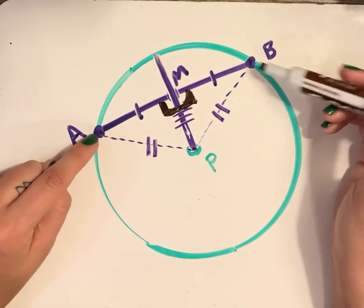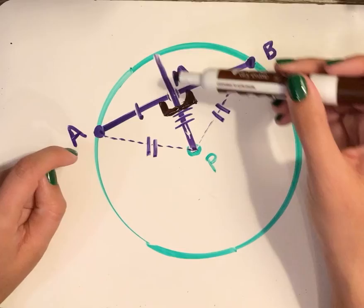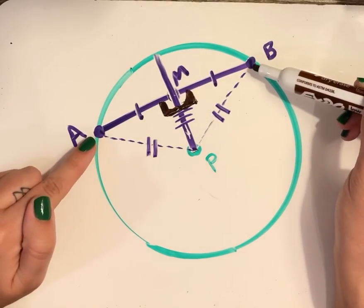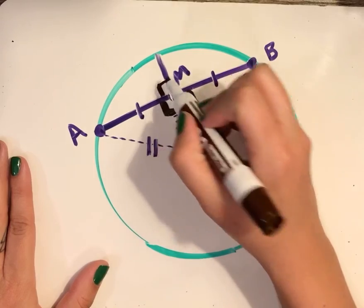So since this radius here that we drew, since it bisected AB, it goes through the midpoint, that means that the radius is also perpendicular to segment AB, so it creates right angles.